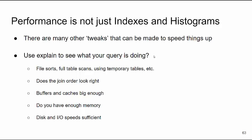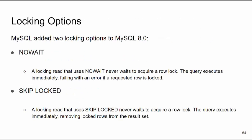Performance is not just indexes and histograms. You can use EXPLAIN to see other things your query is doing — file sorts, full table scans, temporary tables. Over time you get a feel for whether the join order looks right. Also consider your configuration for buffers and caches, whether you have enough memory, and whether your disk speeds are fast enough.